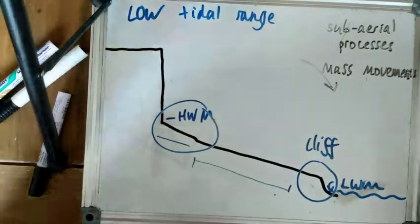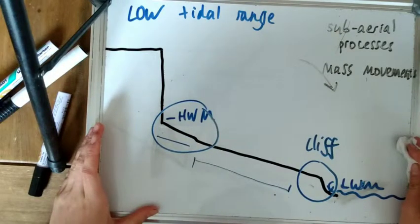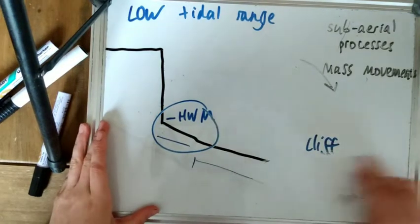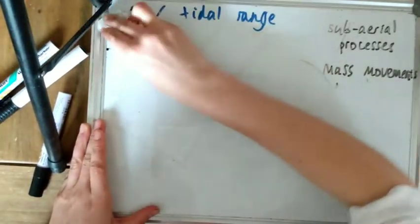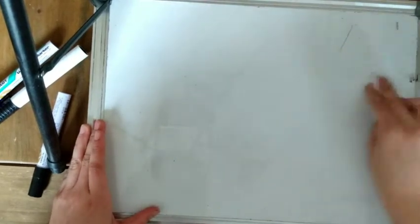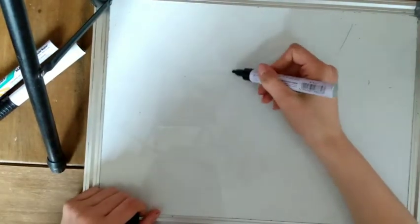So yeah, that's pretty much it. Something I didn't mention was, if the climate greatly reduces in temperature and the sea level drops a great deal, then shore platforms will become raised beaches and the cliffs behind them will become relic cliffs. So they'll kind of be a flat shore platform, and then the sea a lot lower.